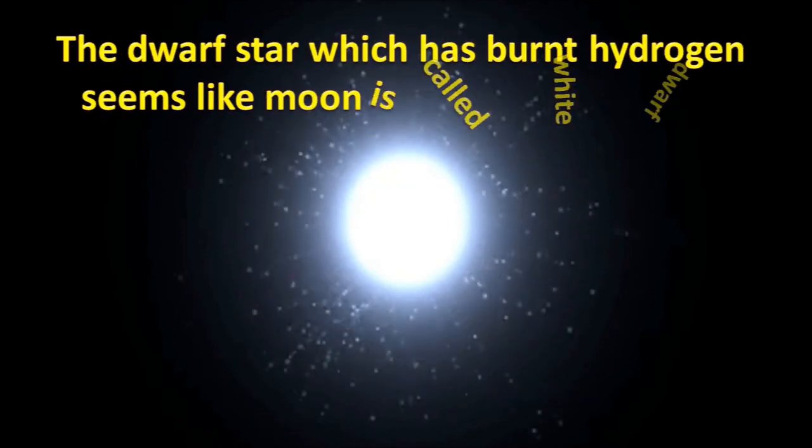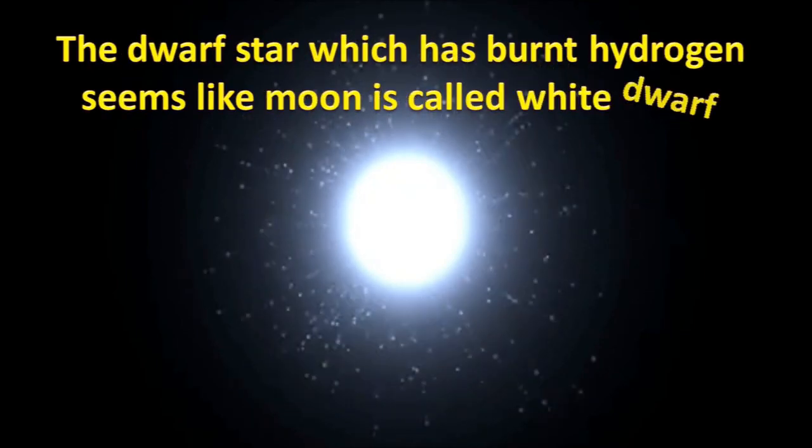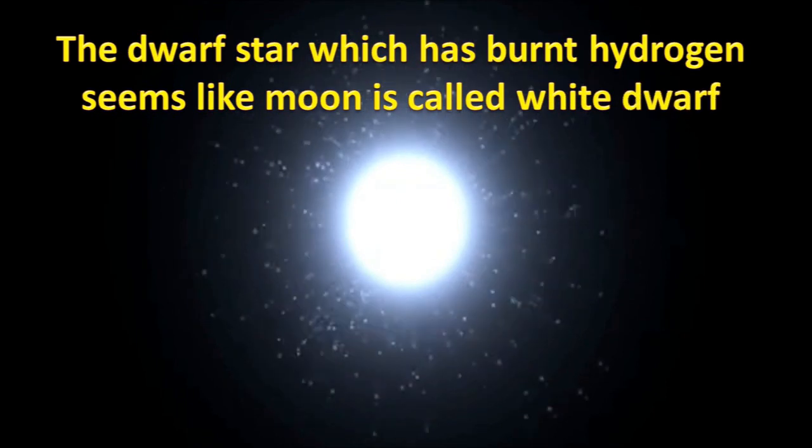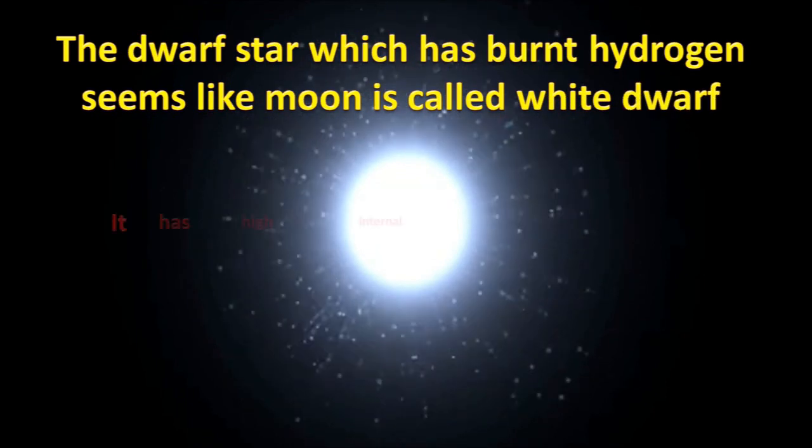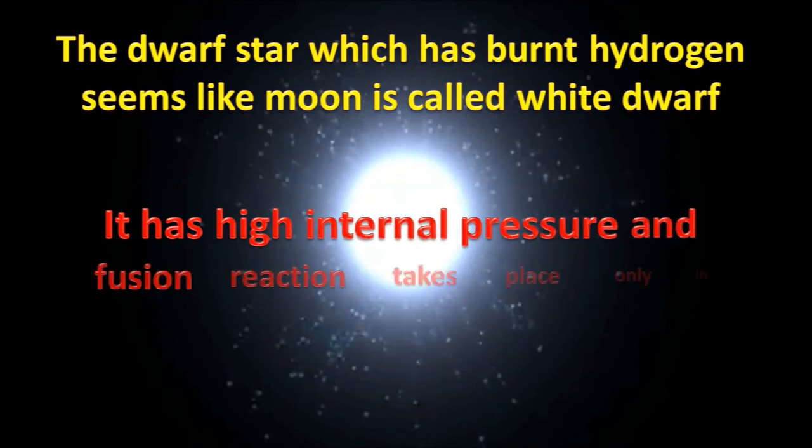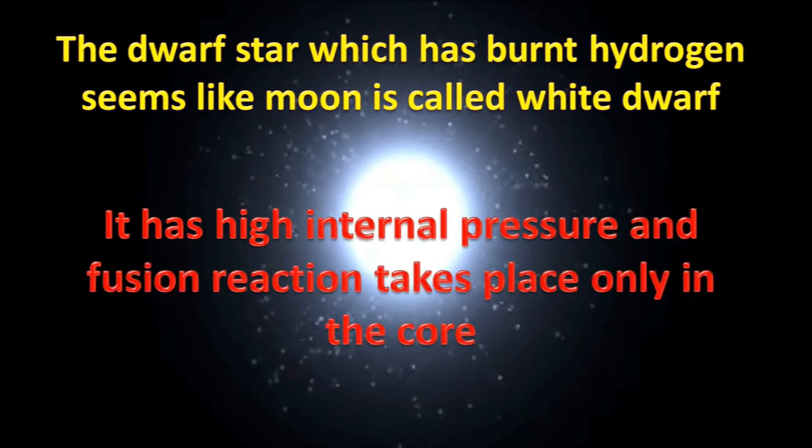The dead star which has burnt hydrogen and looks like a moon is called a white dwarf. It has high internal pressure and fusion reaction takes place only in the core.